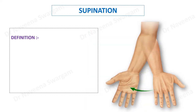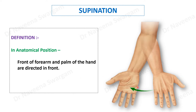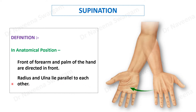Coming to supination: it is defined as the position where, in anatomical position, the front of the forearm and the palm of the hand are directed in front, with the radius and ulna lying parallel to each other.